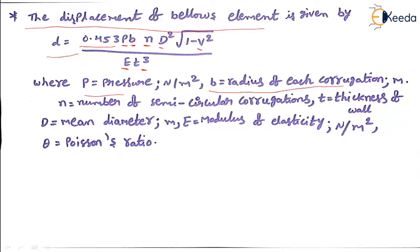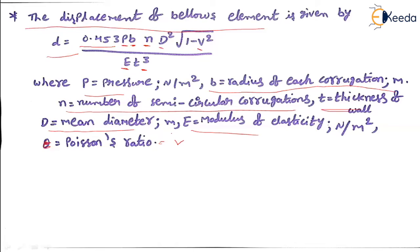In the formula: p is the pressure in Newton per meter square, b is the radius of each corrugation in meters, n is the number of semicircular corrugations, t is the thickness of the wall, d is the mean diameter, E is the modulus of elasticity, and v is Poisson's ratio. With that we finish the concept of bellows. To increase sensitivity in bellows, increase the number of folds from 5 to 20.